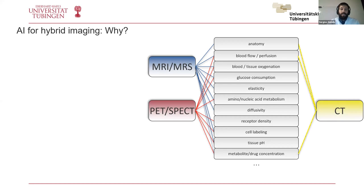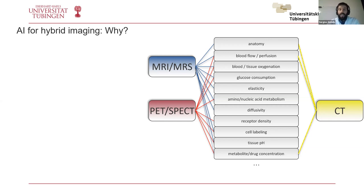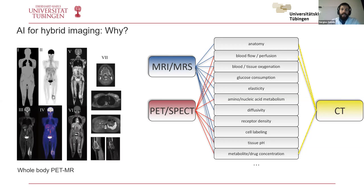From PET-CT and SPECT-CT to PET-MRI, you can have different combinations of imaging modalities and thus numerous different parameters — anatomy in CT or MRI, blood flow, perfusion, glucose consumption using FDG-PET, diffusion-weighted imaging, and more. This means the data you acquire are not 2D or 3D but often 4D, and many times even 5D because you also have a temporal resolution. This makes hybrid imaging really complex and difficult to analyze, both in research and in clinical settings.